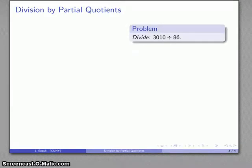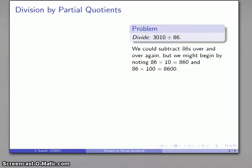Let's think about a division like 3,010 divided by 86. We might subtract 86 over and over again, but that's going to take a long time. But it's worth noting that an easy multiple of 86 is times 10. 86 times 10 is 860. 86 times 100 is 8,600. Now, that's too big. We can't subtract this from 3,010, but we can certainly subtract 860.